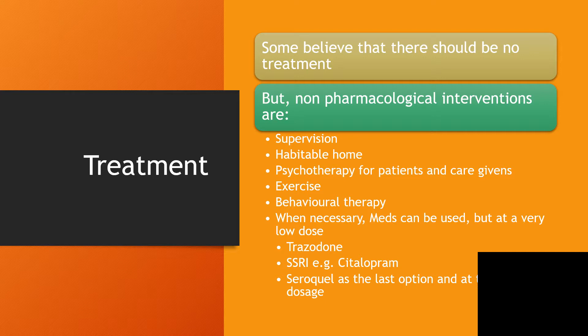Regarding treatment, some believe that there should be no pharmacological treatment at all. Going through the literature on frontotemporal dementia, some books state there is no need for pharmacological treatment, but you can embark on non-pharmacological interventions, which include supervision, a suitable home environment, and psychotherapy for the patient and caregivers, because they are going to face a lot of stress. Exercise and other therapies are also recommended.